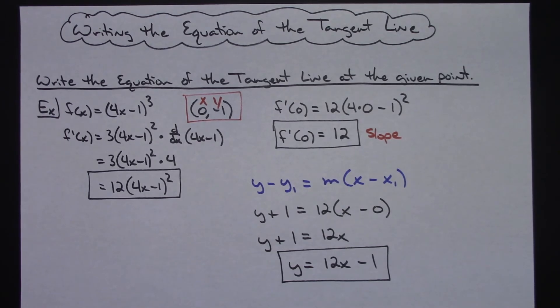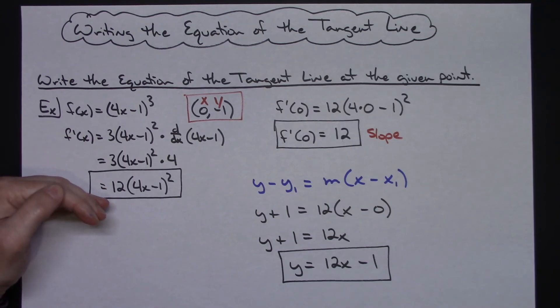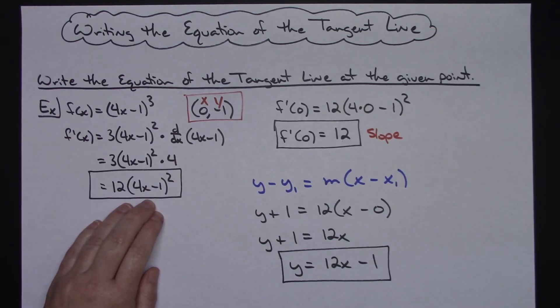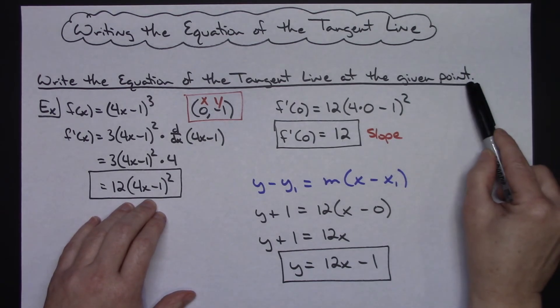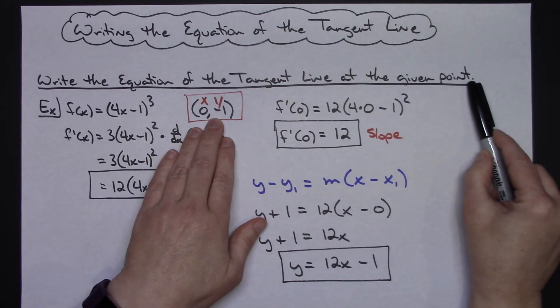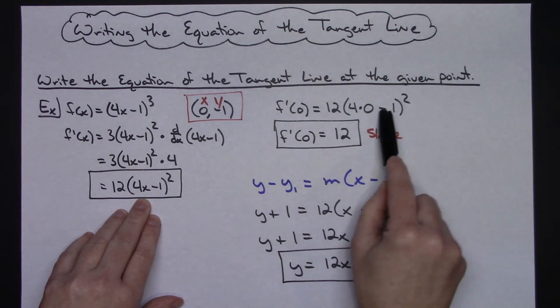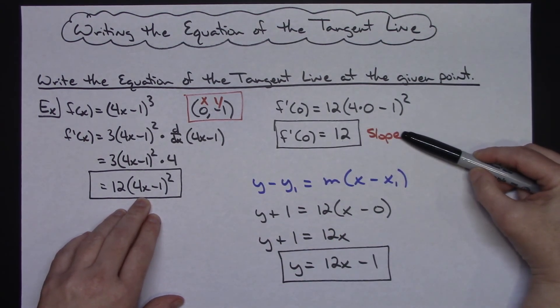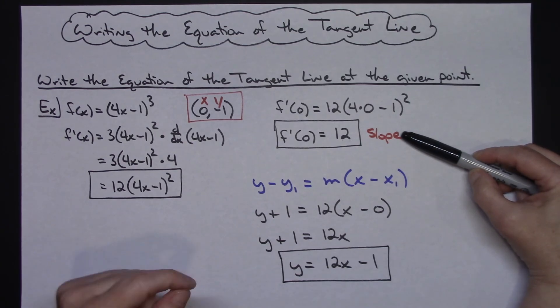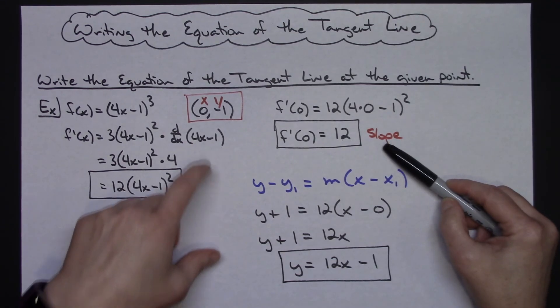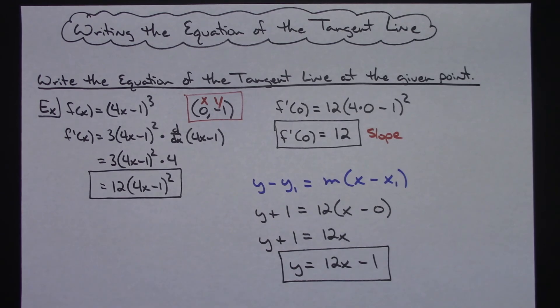But basically, finding the equation of a tangent line at a given point: you find the derivative. That derivative gives you the slope at any point along the curve. And since I want it at a specific point, I take that point and plug it into my equation. At x = 0, what is the slope? I can calculate the actual numerical value of the slope at that point, and then using the slope and the point I can write the equation of the tangent line.